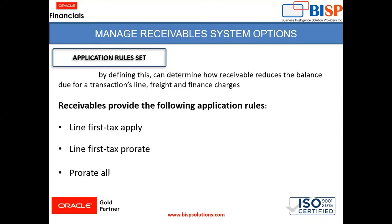The last one is Pro Rate All. In this, a Proportionate Amount is applied to Line, Tax, Freight, and Finance Charges. This is all about the Application Rule Set.